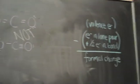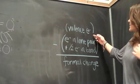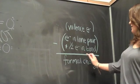In summary, this is how you determine the formal charge. Valence electrons minus the electrons in the lone pair plus half the electrons in the bond.